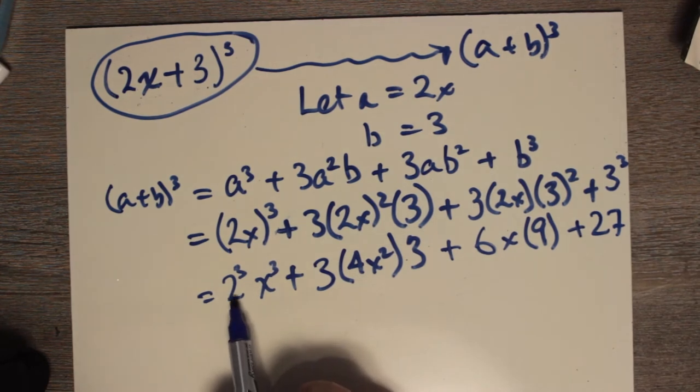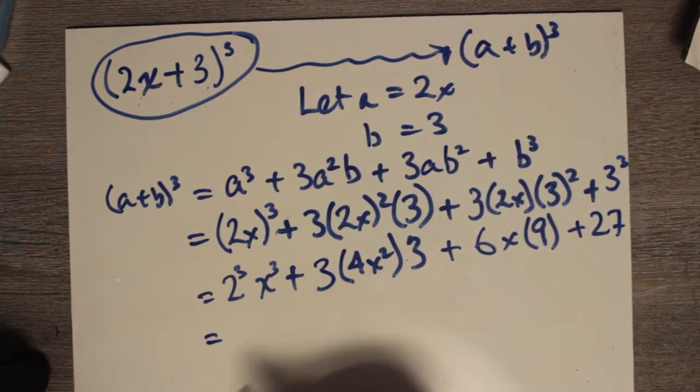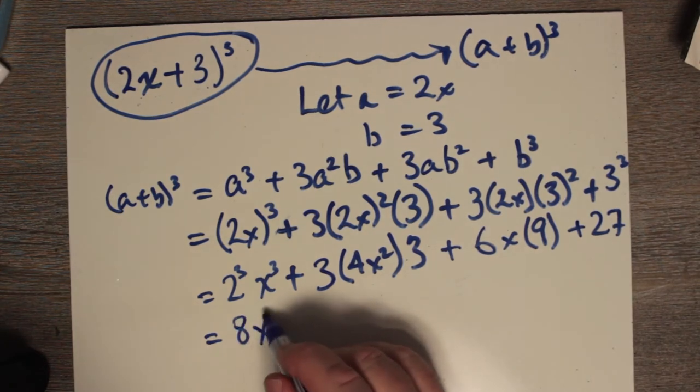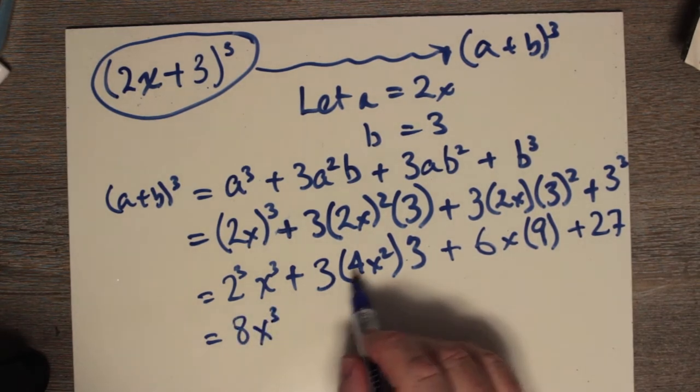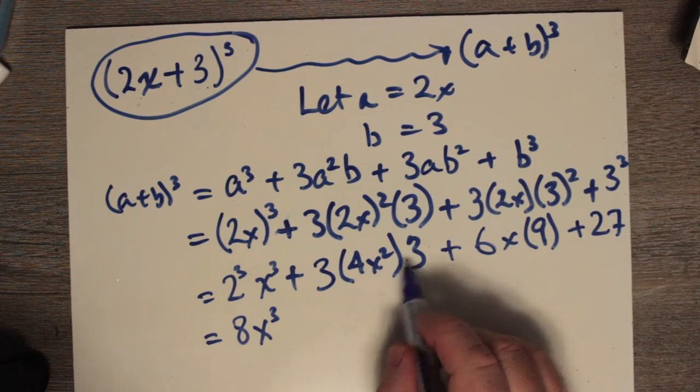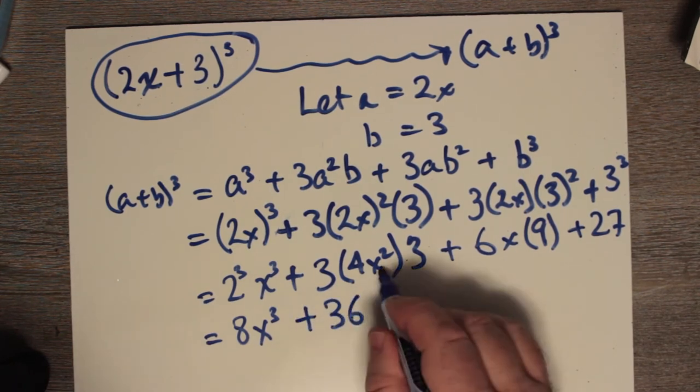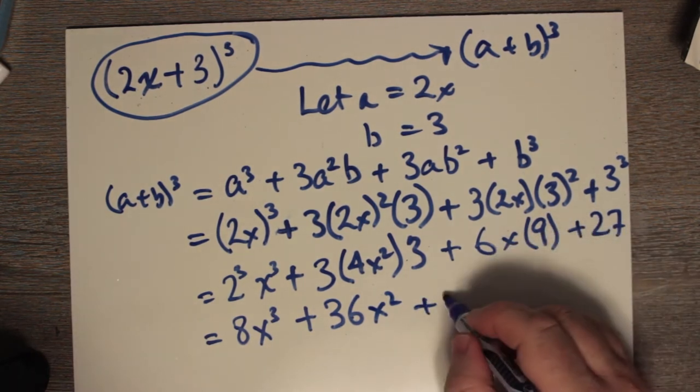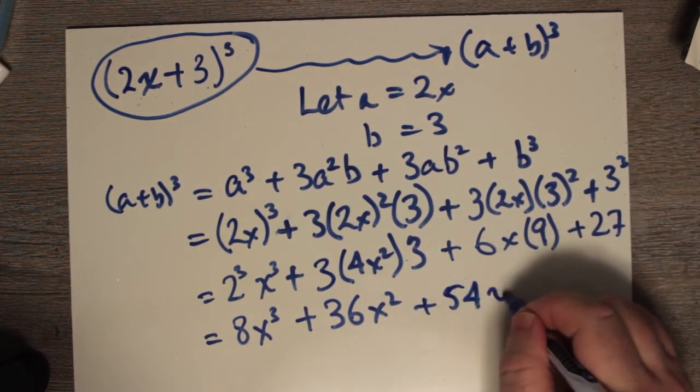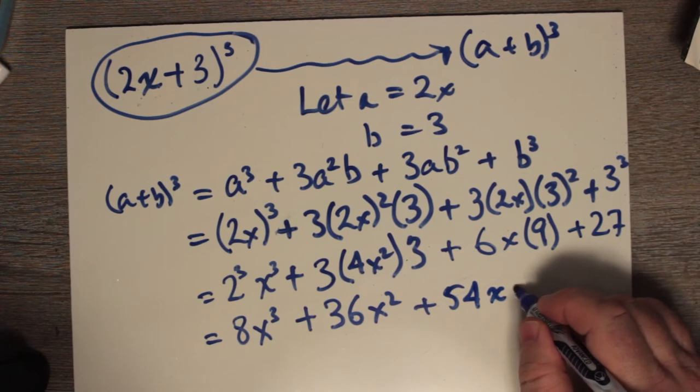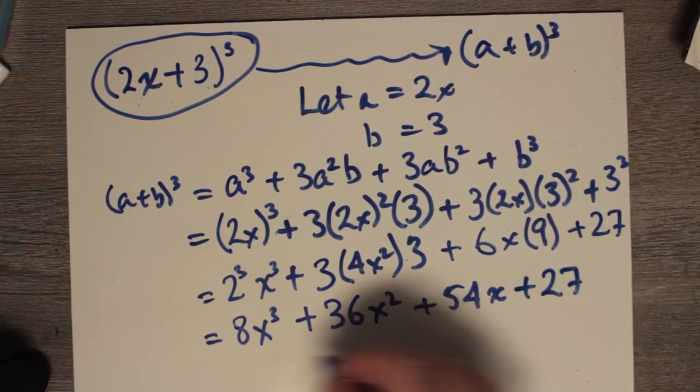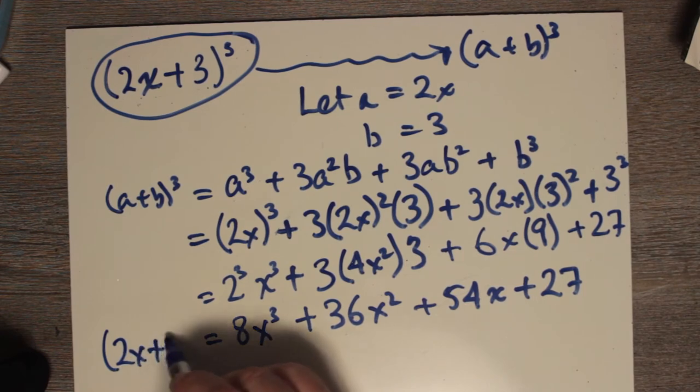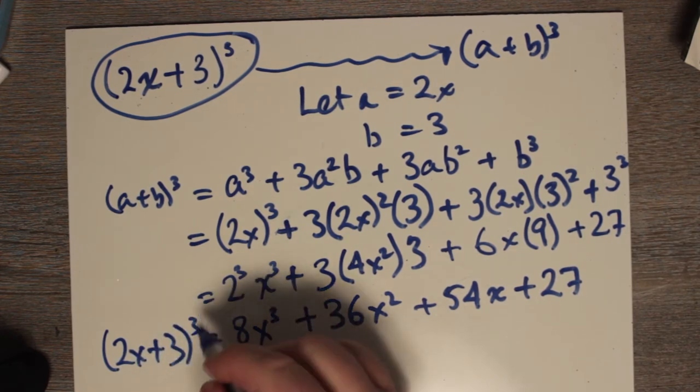What about, okay, 2 cubed. Let's start finalizing things now. 2 cubed is 8. We have 8x cubed. 3 times 4 is 12. 12 threes are 36. So plus 36. And what's this x? x squared. Plus 6 times 9 is 54. x. x just has a power 1. Plus 27. This is our expanded version of 2x plus 3 to the power 3.